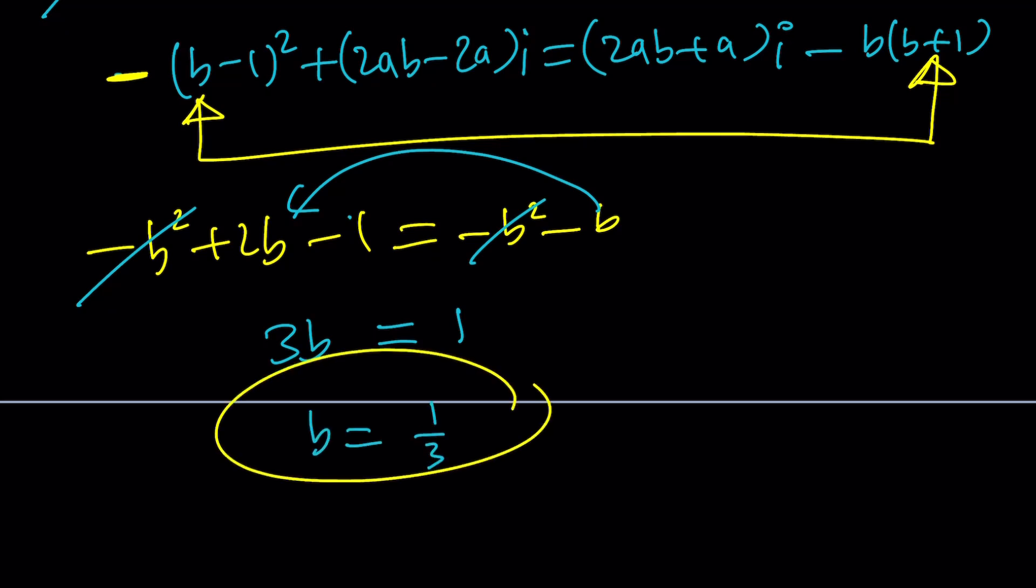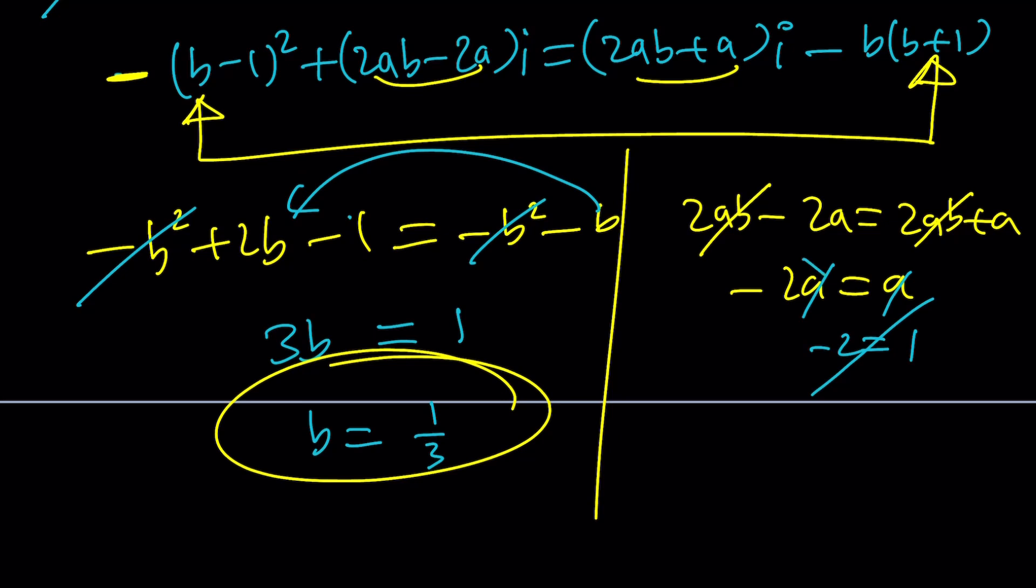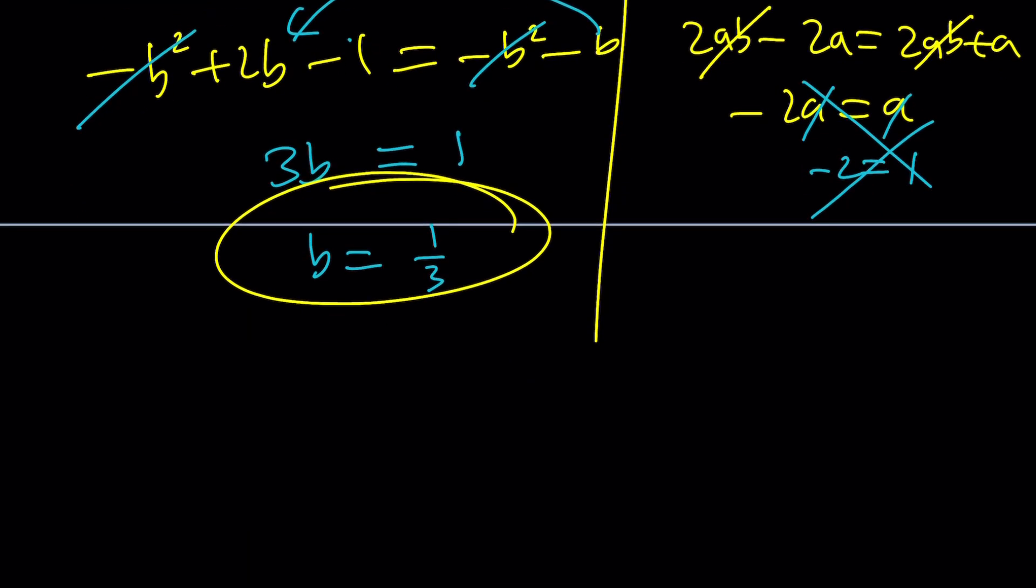That's the b value. How do I find the a value? Easy. Just compare the imaginary parts. But notice that when you compare them, 2ab cancels out, which is nice. We end up with negative 2a equals a. So when you get an equation like this, do you just cancel out the a's and say negative 2 equals 1? No, because that's not true. Here's what you're supposed to do instead. Put everything on the same side. Add 2a. You'll get 3a equals 0, which means a equals 0. That is the right way to do it. So we got the values of a and b.